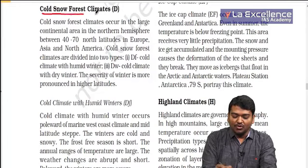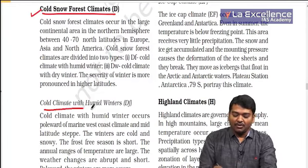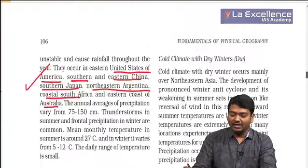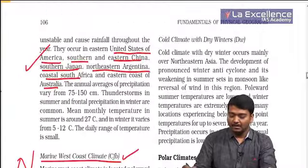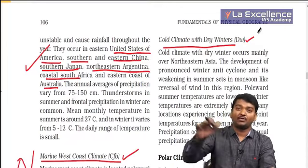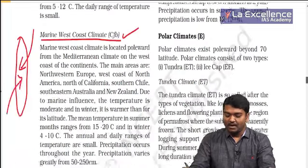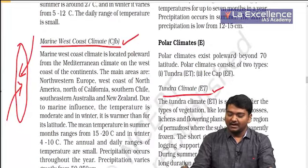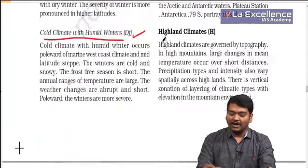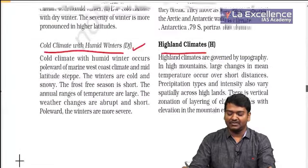Cold snow forest climate (D) covers 45 to 60 degrees. Humid continental gets rainfall usually during winters throughout the year. Cold climate with dry winters (DW) does not get winter rainfall. Then you have polar climates — tundra and ice caps. Highland climates show different climatic conditions with increasing height.